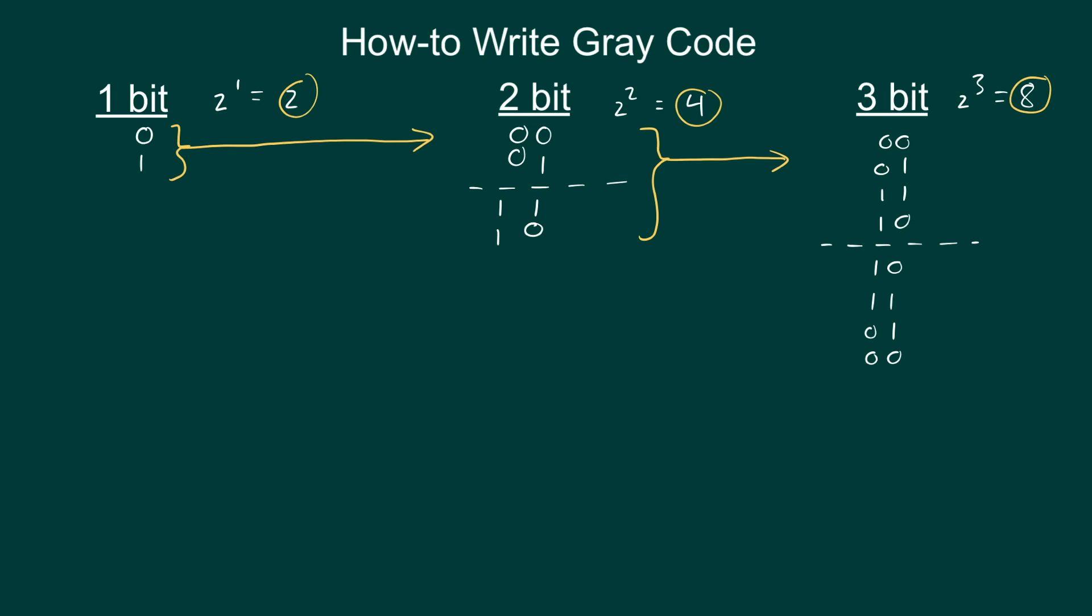The next thing I'll notice is that this is in 2-bit and not in 3-bit. So I need to convert it to 3-bit and to do that I just add zeros to the top half. So 0 0 0 0 and I add ones to the bottom half.